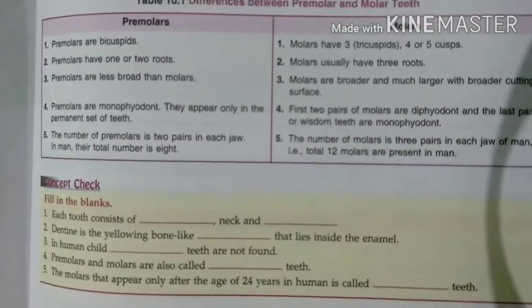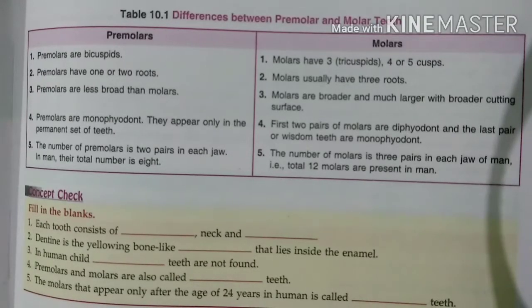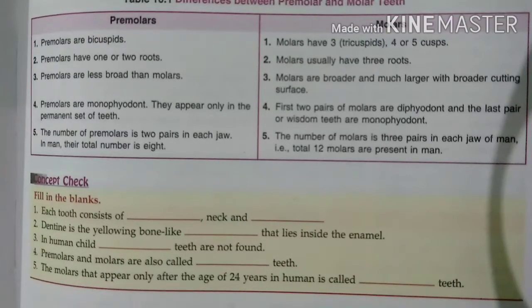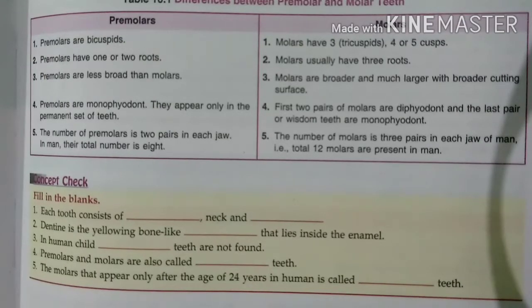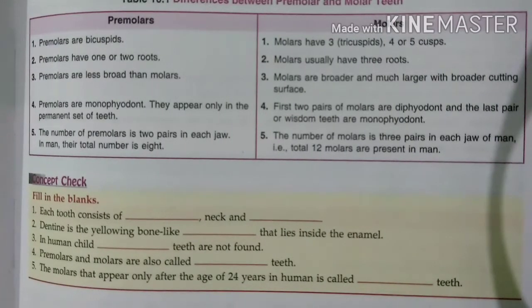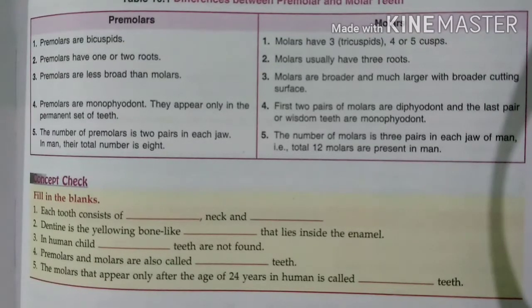What is the difference between premolars and molars? Premolars are bicuspids and molars are tricuspids with 4 or 5 cusps. Premolars may have 1 or 2 roots while molars usually have 3 roots. Premolars are smaller than molars, which are broad with more cutting surface. Premolars are monophyodont and appear only in the permanent set. The first two pairs of molars are diphyodont and the last pair are wisdom teeth which are monophyodont. The number of premolars is 2 pairs in each jaw, totaling 8. The number of molars is 3 in each jaw, totaling 12.